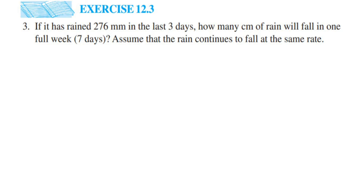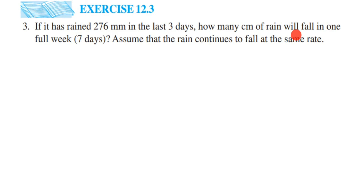Hello everyone. Here is a question from exercise 12.3, third question, chapter Ratio and Proportion. The question is: if it has rained 276 millimeters in the last three days, how many centimeters of rain will fall in one full week — that is seven days — assuming that the rain continues to fall at the same rate.